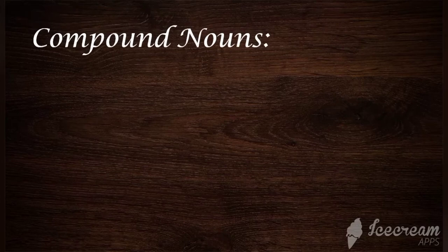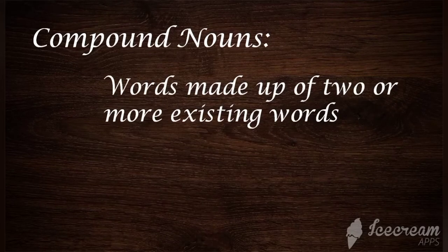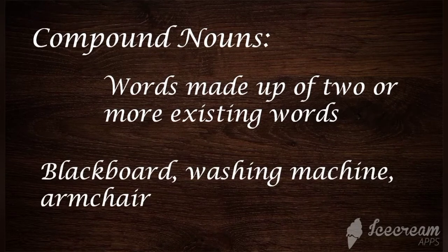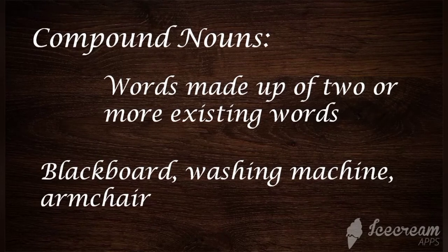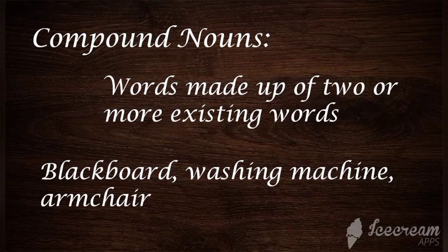Next we are going to see compound nouns. Compound means words made up of two or more existing words. For example, blackboard — black is one word and board is another word; these two are combined to form a new word, and it's an object, so it is a compound noun. Washing machine — washing and machine together form one word, and it is a thing. Armchair — arm and chair combined to form a new word, armchair, which is a thing and comes under compound nouns.